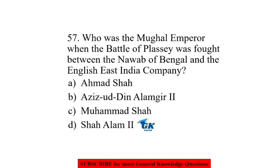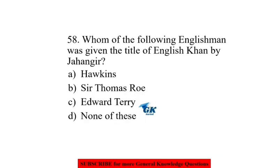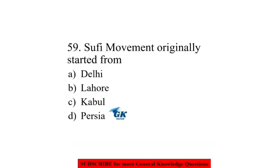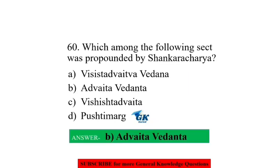Who was the Mughal emperor when the Battle of Plassey was fought between the Nawab of Bengal and the English East India Company? Aziz-ud-Din Alamgir II. Which Englishman was given the title of 'English Khan' by Jahangir? Hawkins. The Sufi movement originally started from Persia. Which sect was propounded by Shankaracharya? Advaita Vedanta.